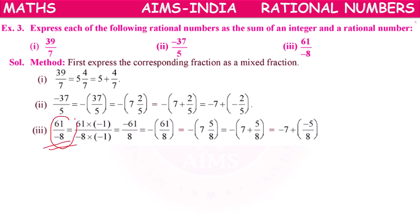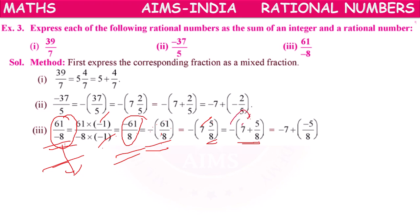For 61/(-8): first convert to standard form by multiplying by -1/-1 to get -61/8. Keep minus outside: -(61/8). 8 × 7 = 56, remainder 5. So 61/8 = 7 + 5/8, and -(7 + 5/8) = -7 + (-5/8). So we can represent a rational number as the sum of an integer and another rational number.